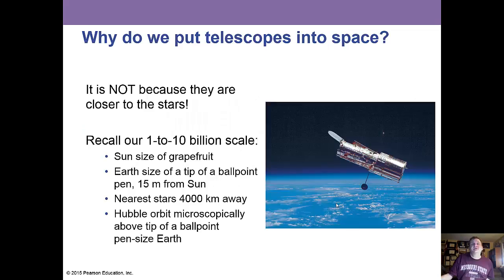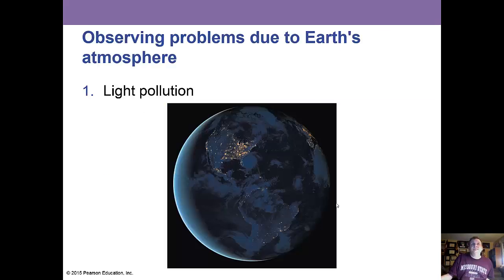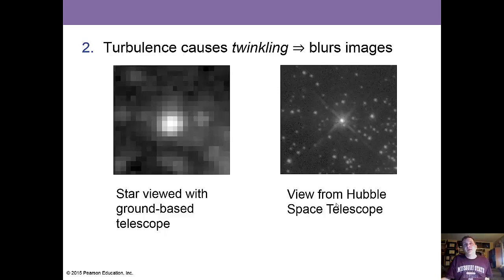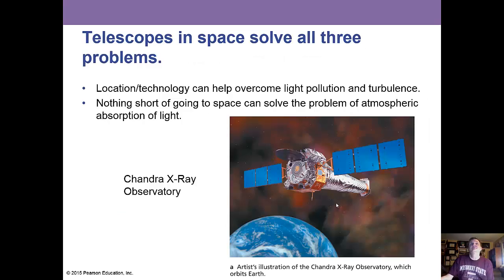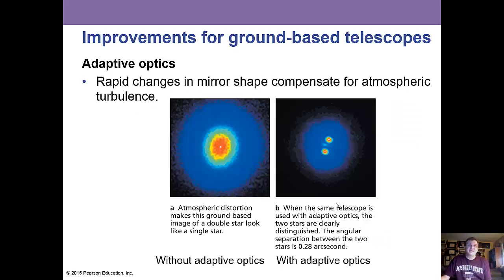Why do we put telescopes in space? To get away from the blur of the atmosphere. Problems due to Earth's atmosphere include light pollution, street lights, and turbulence that causes twinkling and blurry images. The atmosphere also absorbs most of the electromagnetic spectrum, including all ultraviolet, X-ray, and most infrared. We have the X-ray Observatory Chandra in space. On Earth, we can use adaptive optics — pistons underneath each mirror segment adjust the mirrors individually 30 times every second to form a sharper, higher-resolution image.